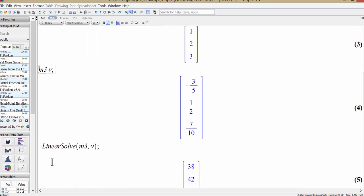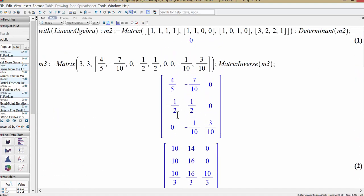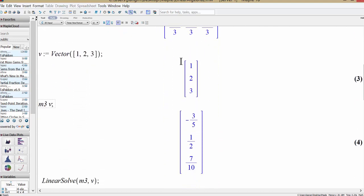And to solve a system, this would be matrix m3x is equal to v. So what we are solving over here is try to find the solution with the coefficient matrix given over here. And the right-hand side is simply 1, 2, 3.